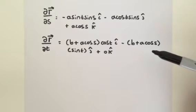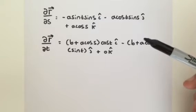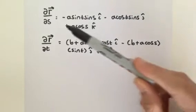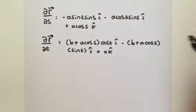Hello. In part 3, we computed the partial derivatives of a vector-valued function R with respect to s and t, which we have here. In this video, we now need to compute the cross product.